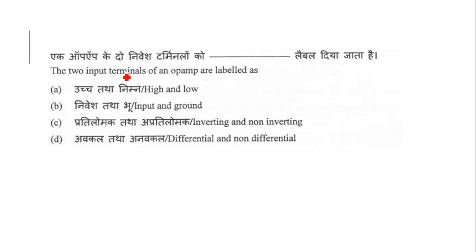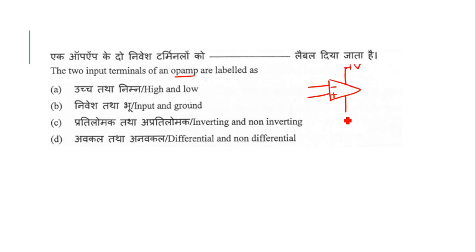The next question: the two input terminals of an op-amp are labeled as what? If you have an op-amp, it has one negative terminal, one positive terminal, an upper cutoff voltage, and a lower cutoff voltage. You have an inverting and a non-inverting terminal, and this is the output terminal.